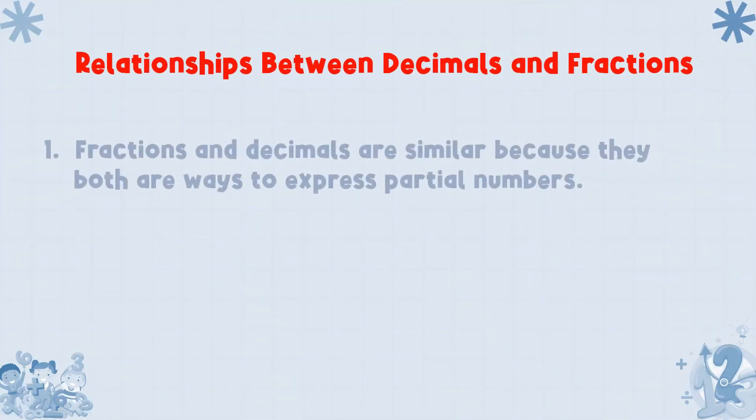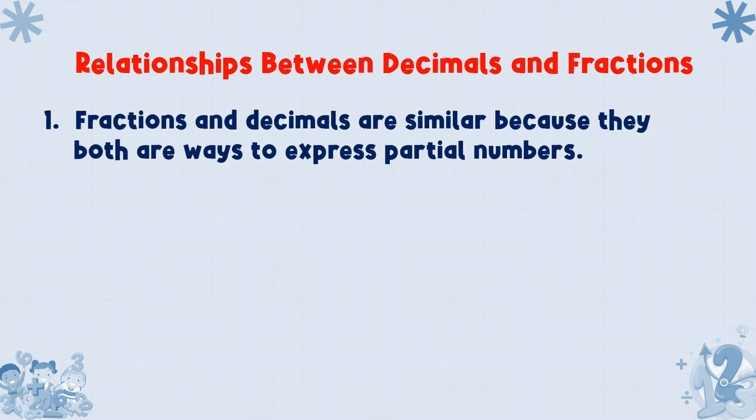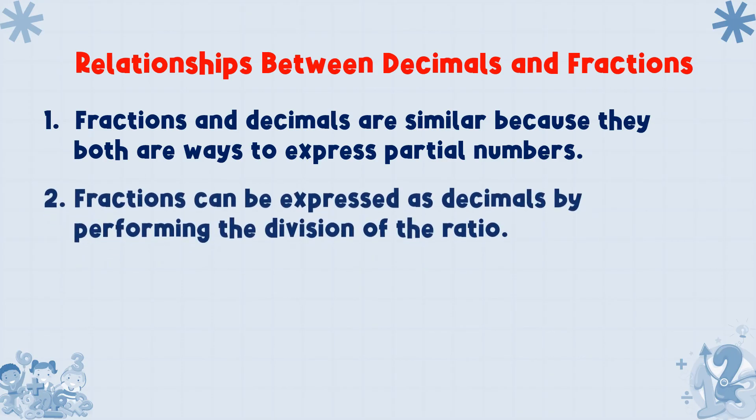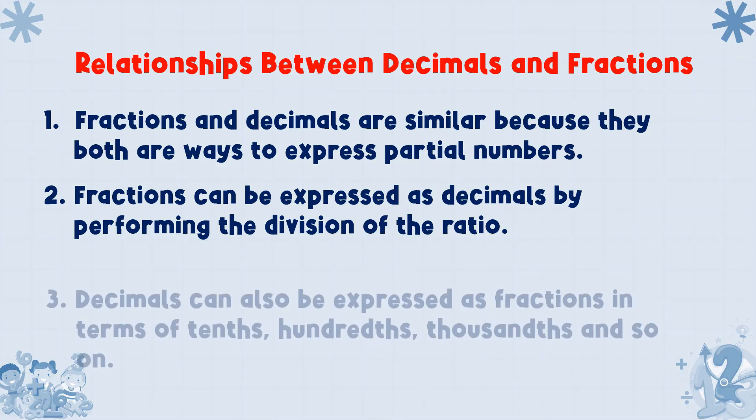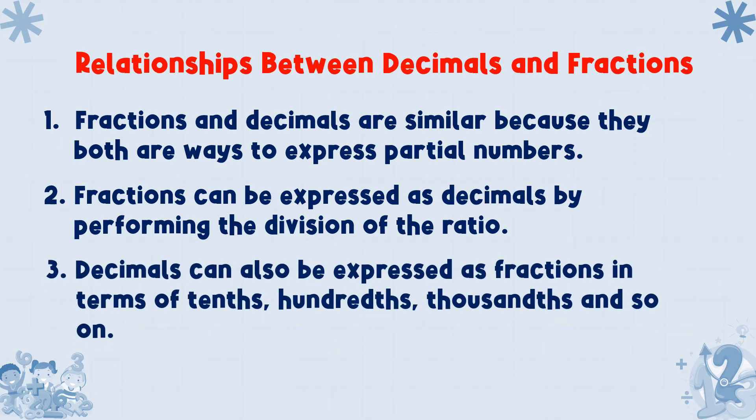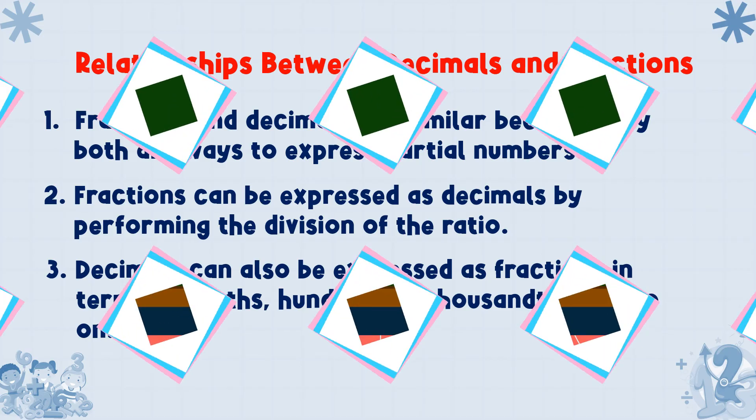Number one: Fractions and decimals are similar because they both are ways to express partial numbers. Number two: Fractions can be expressed as decimals by performing the division of the ratio. Number three: Decimals can also be expressed as fractions in terms of tenths, hundredths, thousandths, and so on.